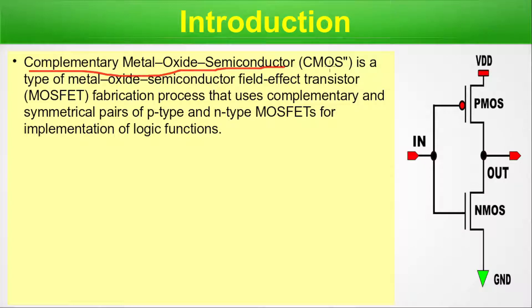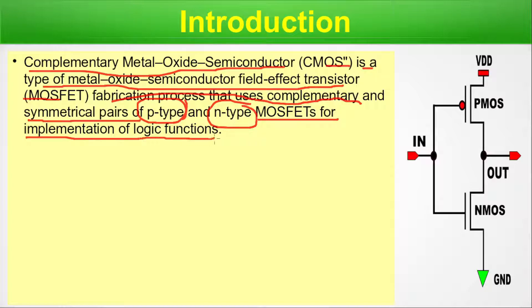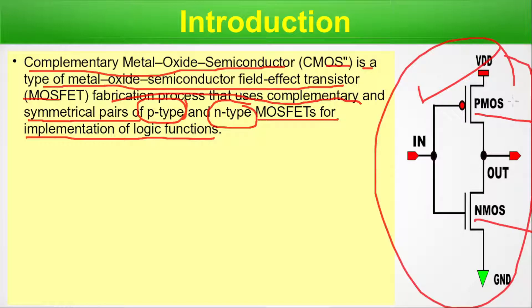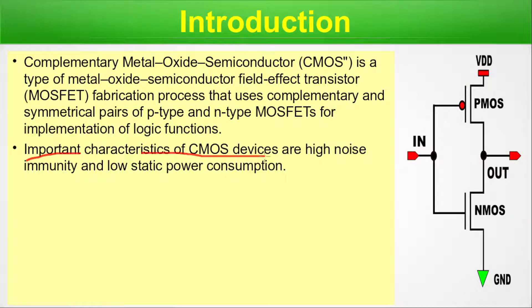Complementary Metal Oxide Semiconductor (CMOS) is a type of MOSFET fabrication process that uses complementary and symmetrical pairs of P-type and N-type MOSFETs for implementation of logic functions. This circuit is used in digital logic circuits. Although it is a very analog circuit at heart, this PMOS-NMOS combination acts as a building block of any digital circuit. Important characteristics of CMOS devices are high noise immunity and low static power consumption.